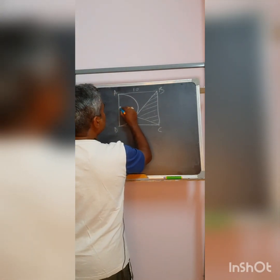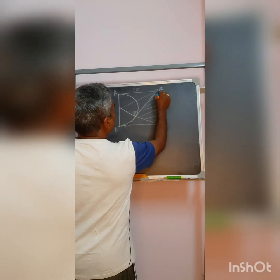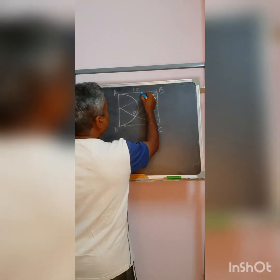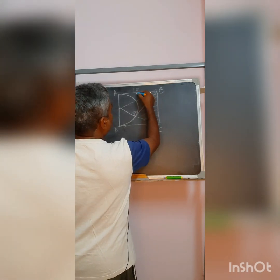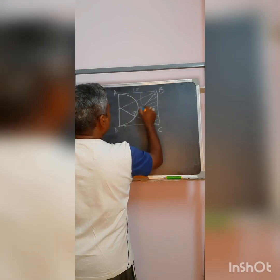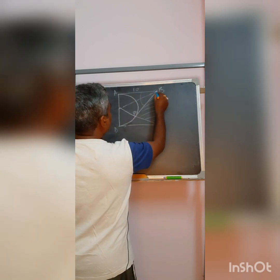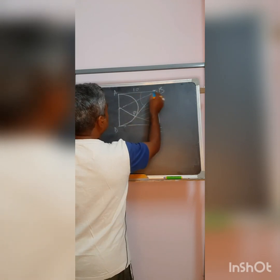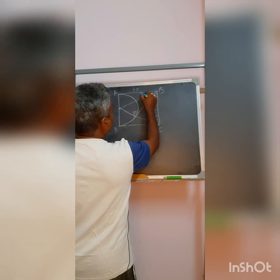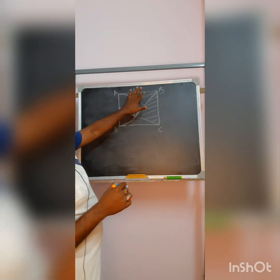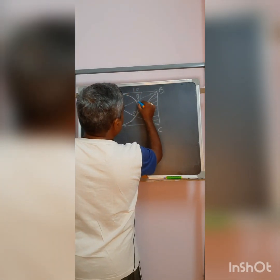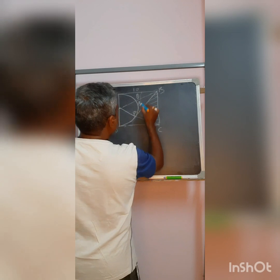If I connect the centre to point B, this will divide the total angle into half, because a tangent drawn from outside to the circle will be of equal length as per the theorem, and if connected to the centre of the circle it divides the angle into equal parts. So I assume this is theta, and this also will be theta.